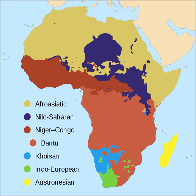Afroasiatic languages are spoken throughout North Africa, the Horn of Africa, Western Asia and parts of the Sahel. There are approximately 375 Afroasiatic languages spoken by over 400 million people. The main subfamilies of Afroasiatic are Berber, Chadic, Cushitic, Egyptian and Semitic.